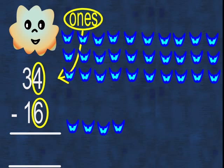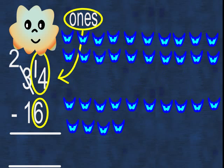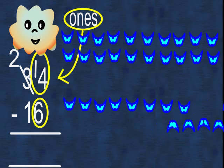So we use the decomposition method to help us. We take a 10 away from the three tens in the top number and add it to the four ones to create 14 birds. Take away six birds. Now we have eight birds left in the ones column.